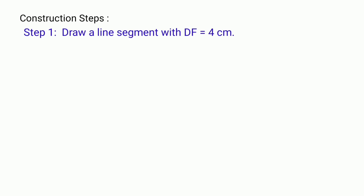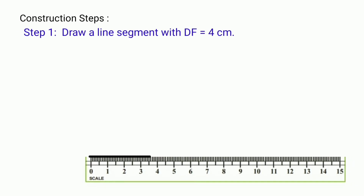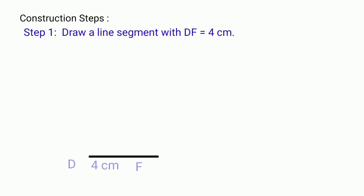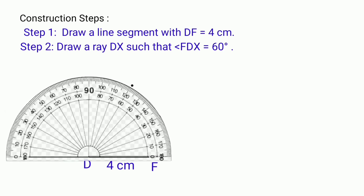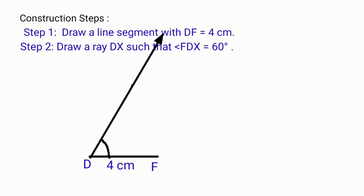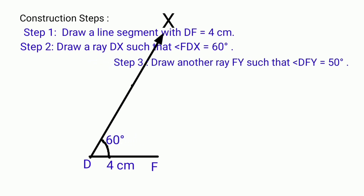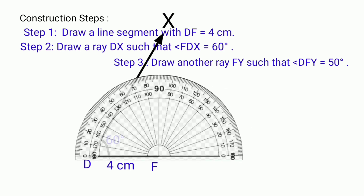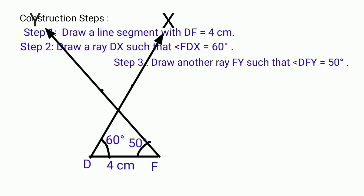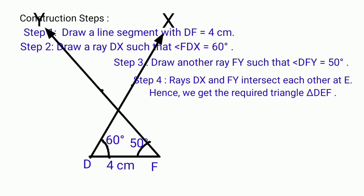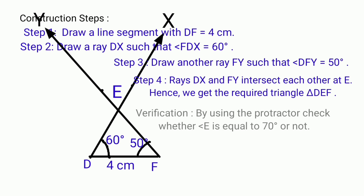Construction steps. Step 1: Draw a line segment DF equal to 4 cm. Step 2: Draw a ray DX such that angle FDX equals to 60 degrees. Step 3: Draw another ray FY such that angle DFY equals to 50 degrees. Step 4: Rays DX and FY intersect each other at E. Hence we get the required triangle DEF.